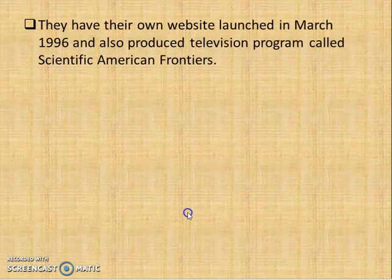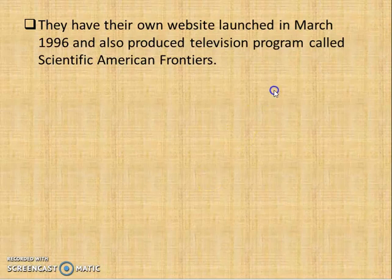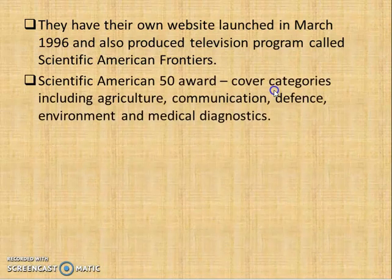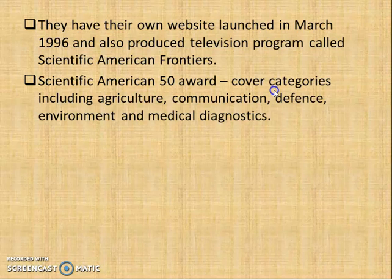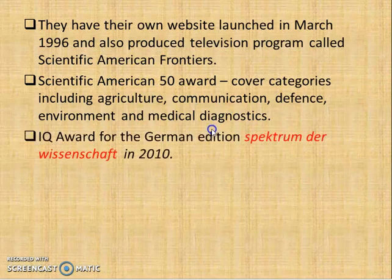Scientific American has its own website, launched in the year 1996, and also produced a television program called Scientific American Frontiers. It has won over 50 awards covering categories including agriculture, communication, defense, environment, and medical diagnostics, as well as a high-key award for its German edition, Spektrum der Wissenschaft.